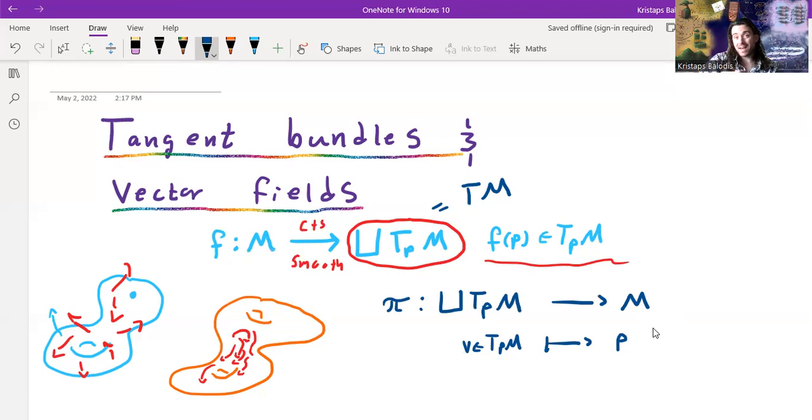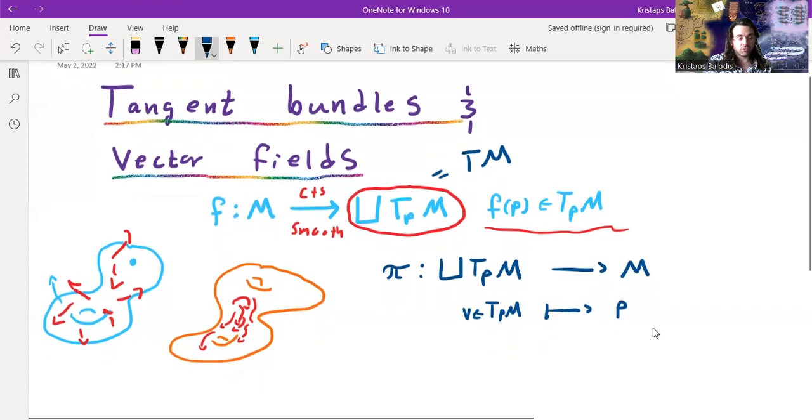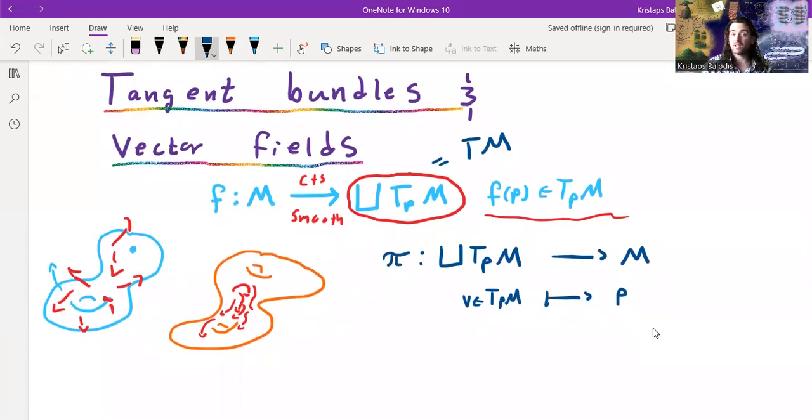Now the thing is, M does have a topology. And if we want to make a topology on here, we're going to do it by simply demanding that the map π is continuous.